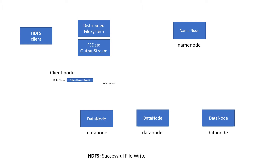Once the client initiates the write operation, the create call will go to the distributed file system. And the distributed file system will send this message to the name node.